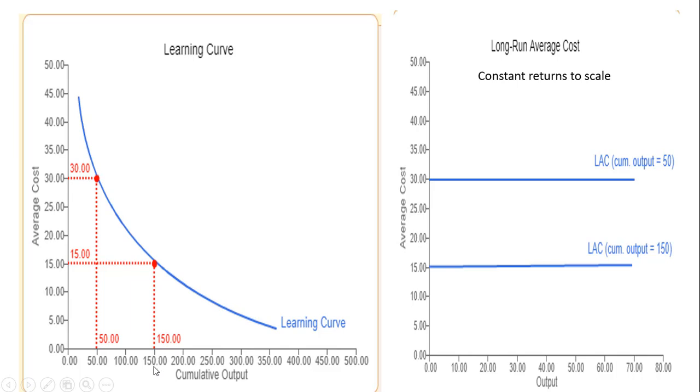If its cumulative output would be 150, it would enjoy lower average cost of now $15. The curve on the right shows this firm's long-run average cost. And here this firm has constant returns to scale, so the long-run average cost curve is just horizontal. Notice that the firm can enjoy the learning curve effect without having economies of scale.